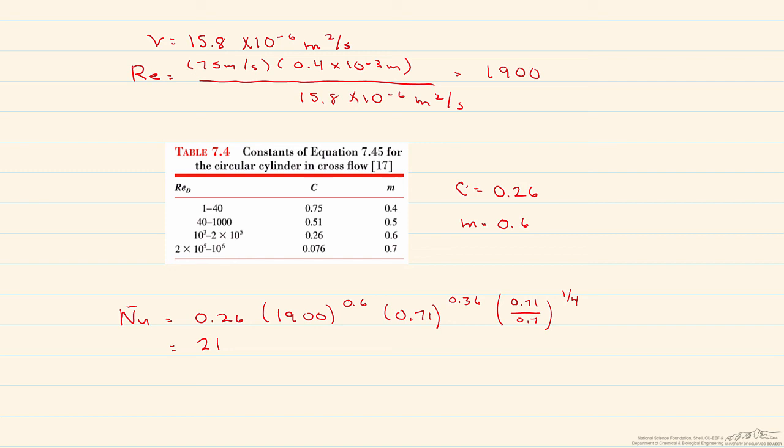So from this Nusselt number, we can figure out this average heat transfer coefficient, which is equal to the Nusselt number multiplied by the thermal conductivity of the air, which we looked up at 25 degrees C. And we divide this entire thing by the diameter. And we end up with a heat transfer coefficient of 1402 watts per meter squared K.